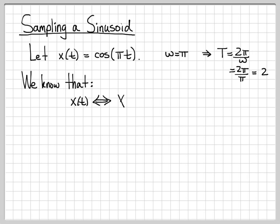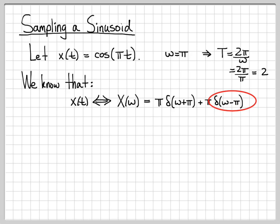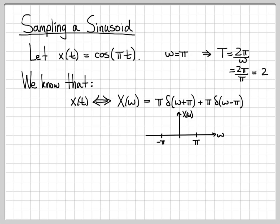In the frequency domain, x of t gives us x of omega. We can go to our Fourier transform table — a cosine gives us two impulses, one at positive the frequency and one at negative the frequency. So there's an impulse at omega equals pi and one at omega equals minus pi, and there's a scale factor of pi when working in radial frequency.